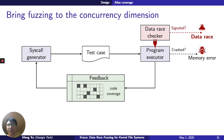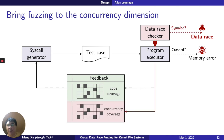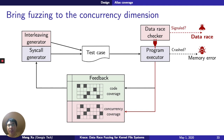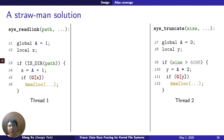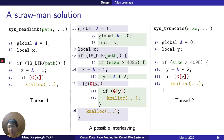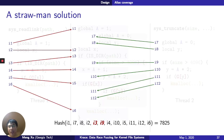By bringing fuzzing to the concurrency dimension, we need to do two things. One is to design concurrency coverage that tracks how much progress we've made in the concurrency dimension. The other is to have an interleaving generator that not only tries to explore code coverage but further expands coverage in the concurrency dimension. For the first question — how do we design concurrency coverage tracking — similar to code coverage, we design a bitmap where every bit means we found a meaningful interaction we haven't seen before. A strawman solution would be: while execution runs, hash the instruction sequences of the two threads as they interleave.